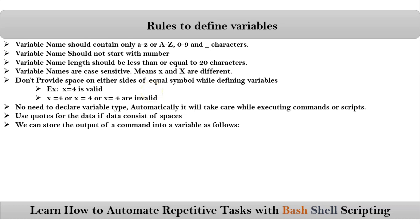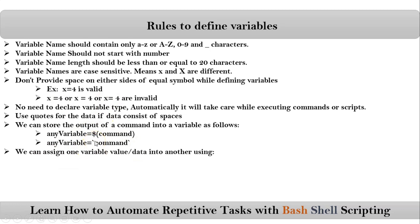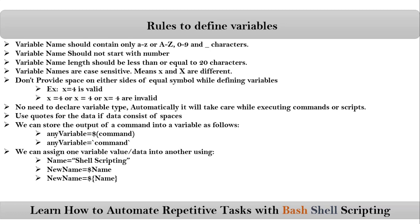We can also store the output of a command into a variable. Simply write: variable=$(your_command), or use the backtick syntax. Additionally, we can assign one variable's value into another variable — for example, newname=$name, though the best practice is to use newname=${name} with curly braces.